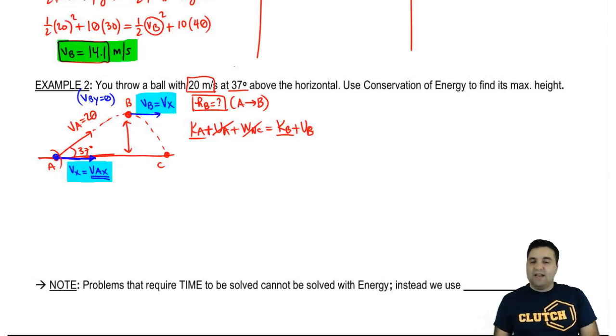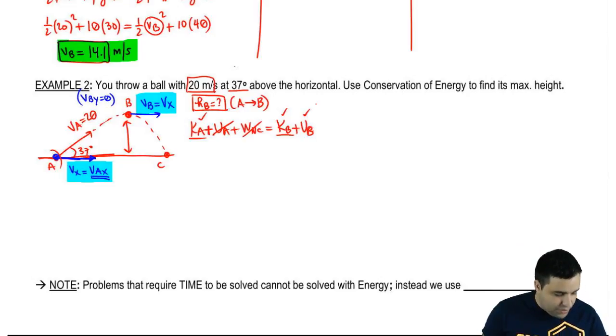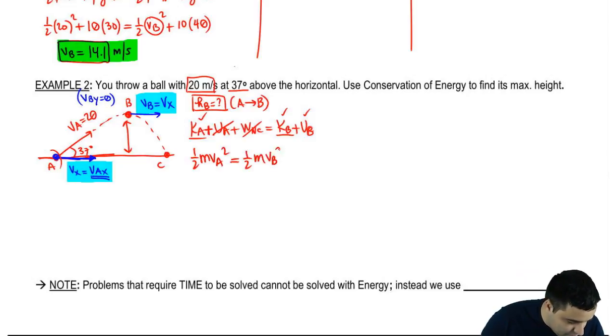Therefore, the entire, all of the speed or velocity at point B comes from its x component. There is no y component. So there's definitely energy here, and there is energy here because there's a height. So let's expand this. Half MVA squared equals half MVB squared plus MGHB. The masses cancel, and I'm looking for HB.